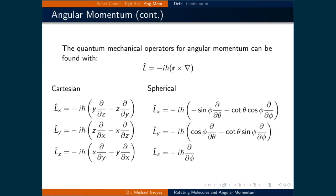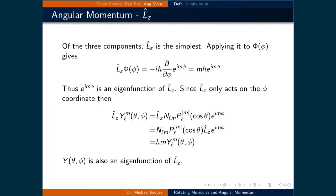The quantum mechanical angular momentum operators can be found by taking the cross product between r and the Laplacian and multiplying it by i times h-bar. They can be expressed in Cartesian or spherical coordinates. We will look at the spherical coordinate versions because our solutions to the rigid rotator are expressed in spherical coordinates. Out of the three components, Lz is by far the simplest, so we will focus on that one. Let's now find out if our solution to the rigid rotator is an eigenfunction of the z component of the angular momentum.